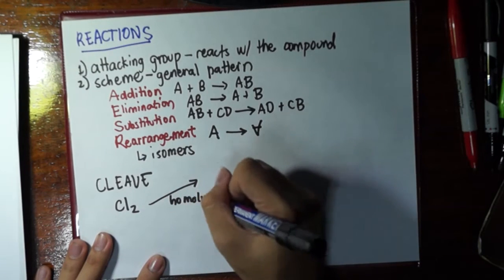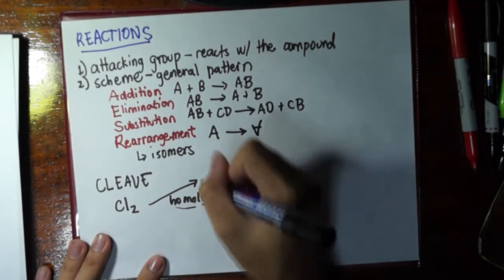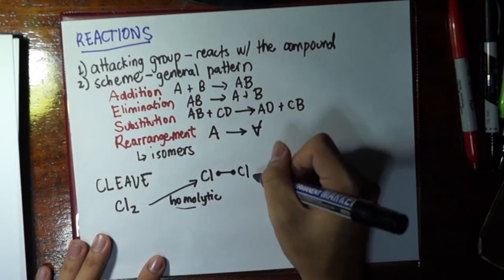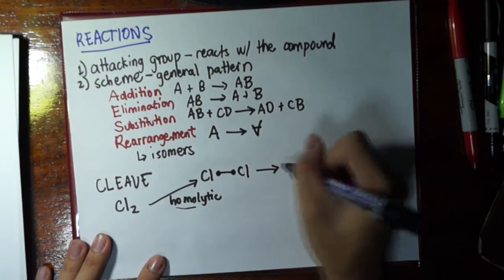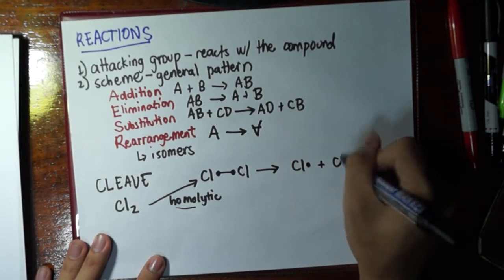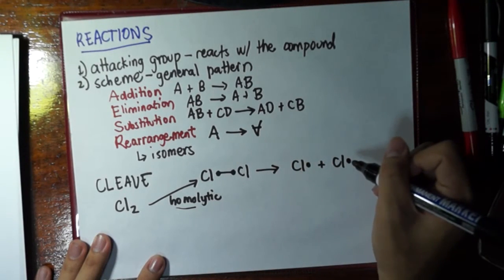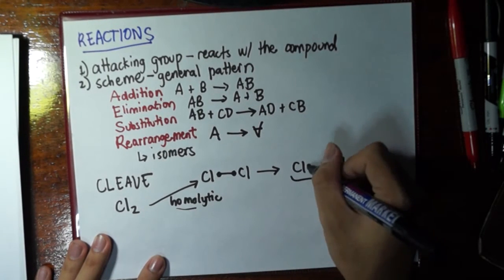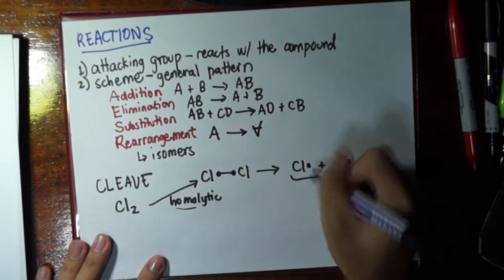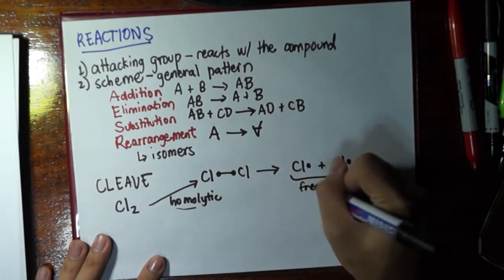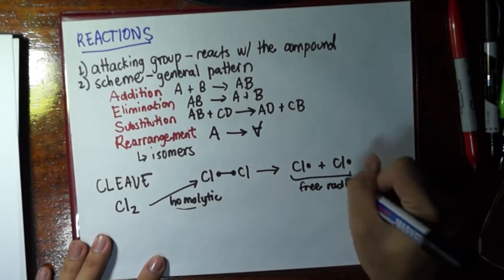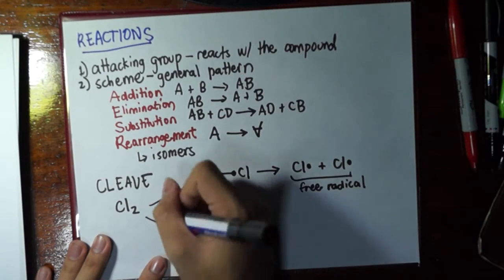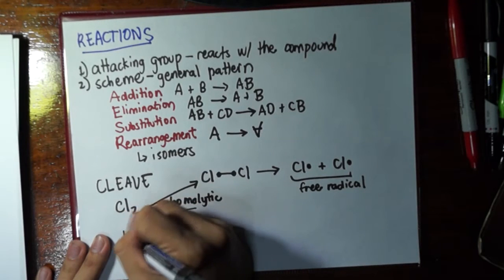We could break this homolytically. Lysis means breakdown, right? Homo means the same. So, meaning, if I have this bond between the two chlorine atoms, they would share the same number of electrons, one each. And here, we call an atom with one unpaired electron as a free radical. And this is the same free radical that we encounter or that commercials say which harm our body because they really do harm our body.